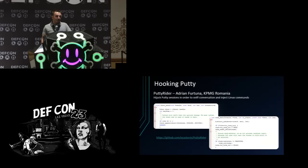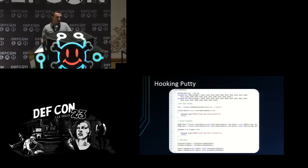Another useful example is PuTTY — a lot of people use it so this is going to be useful. Adrian Fortuna, my colleague from KPMG Romania, wrote a really cool tool called PuTTY Rider that does the same thing — it hooks some functions: ldisk_send and term_data. ldisk_send sends each character, and term_data is called with received data in order to be displayed in PuTTY. Adrian wrote the signatures for the functions so I only had to use those signatures — actually the first bytes of each function — to find and hook them in the text/code section of putty.exe.